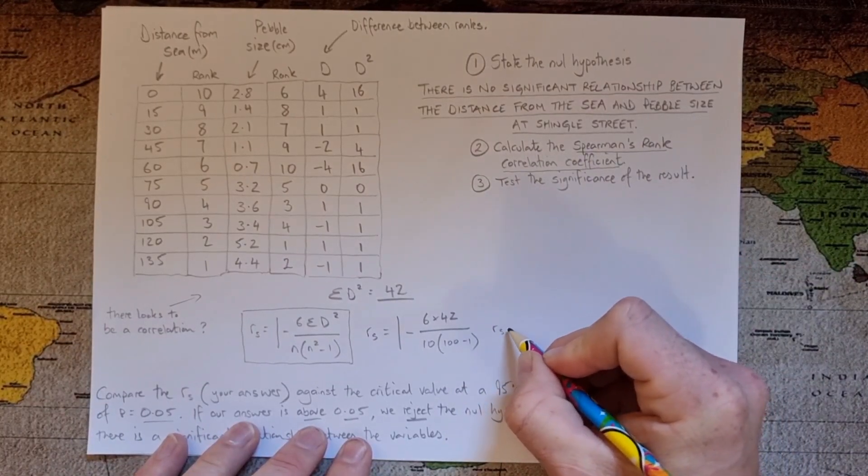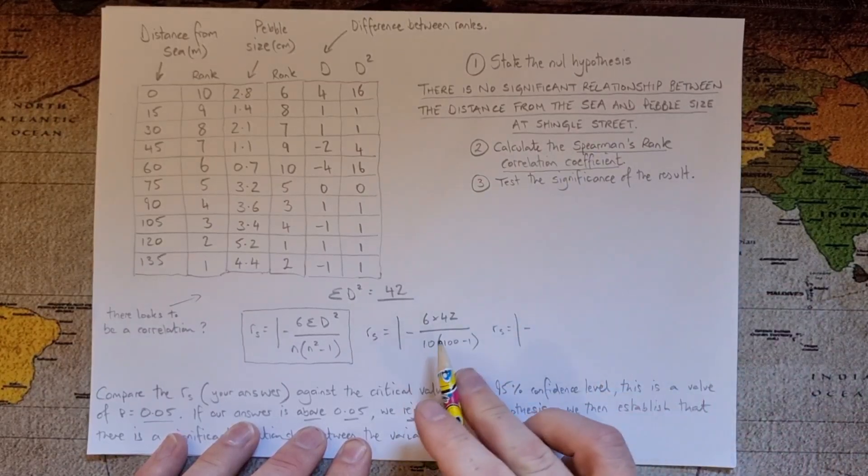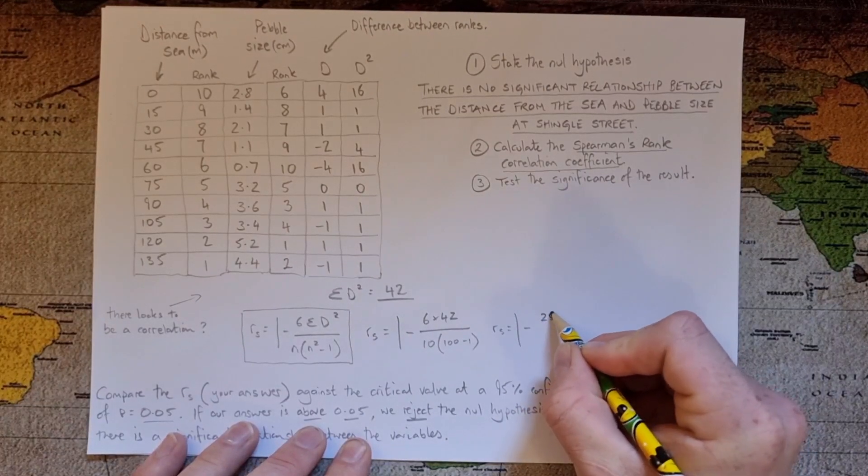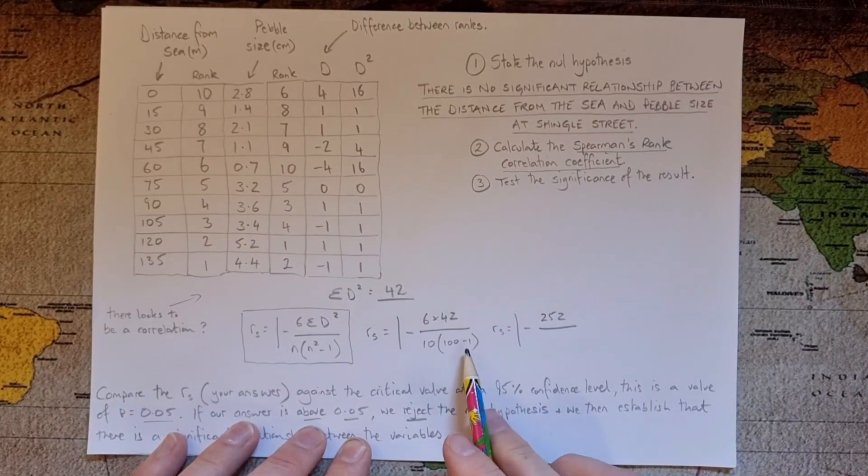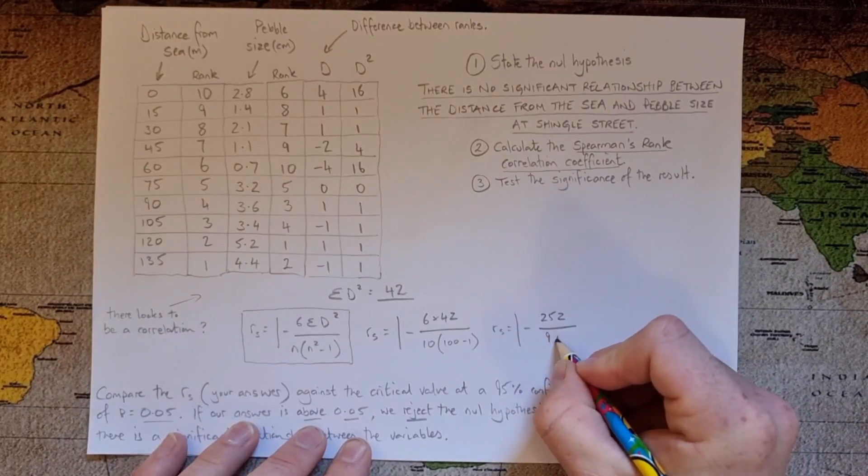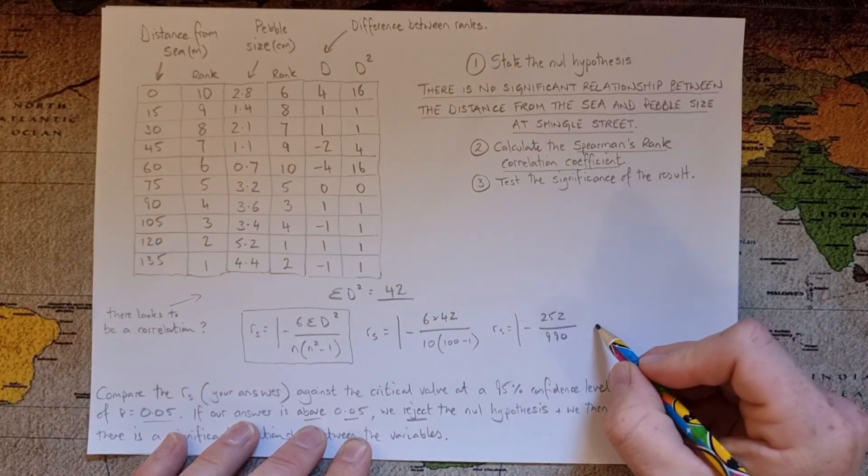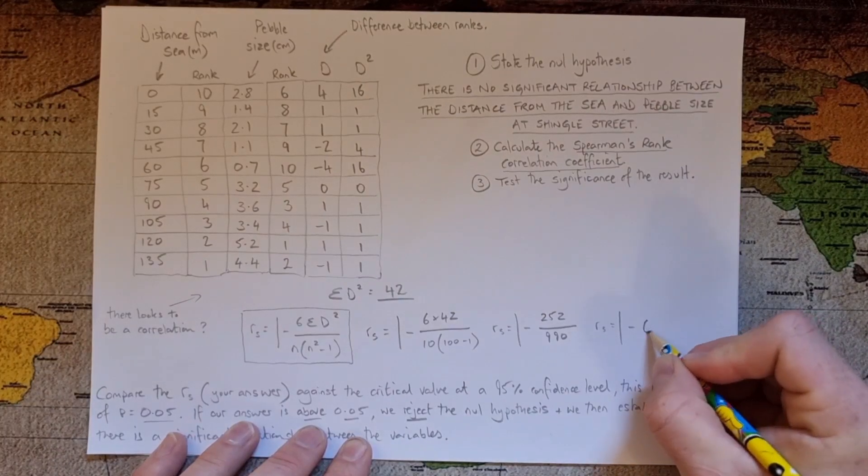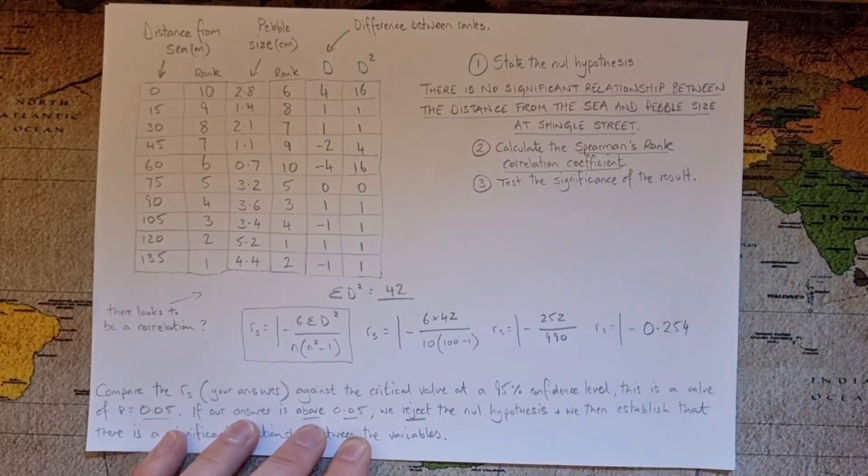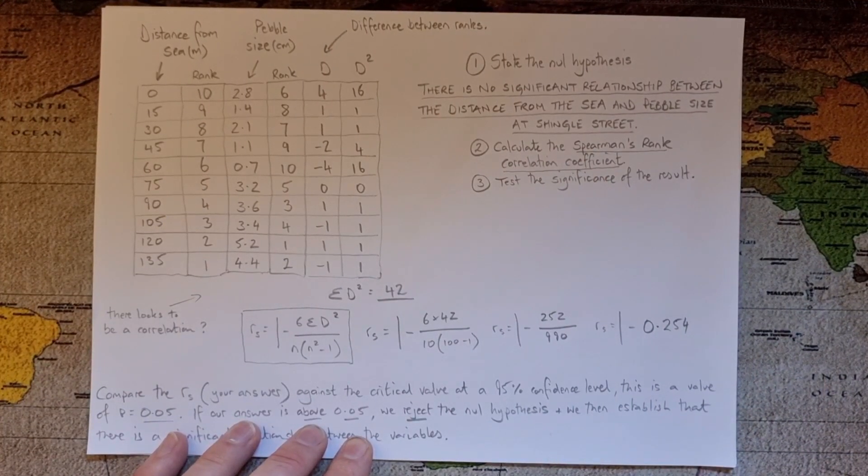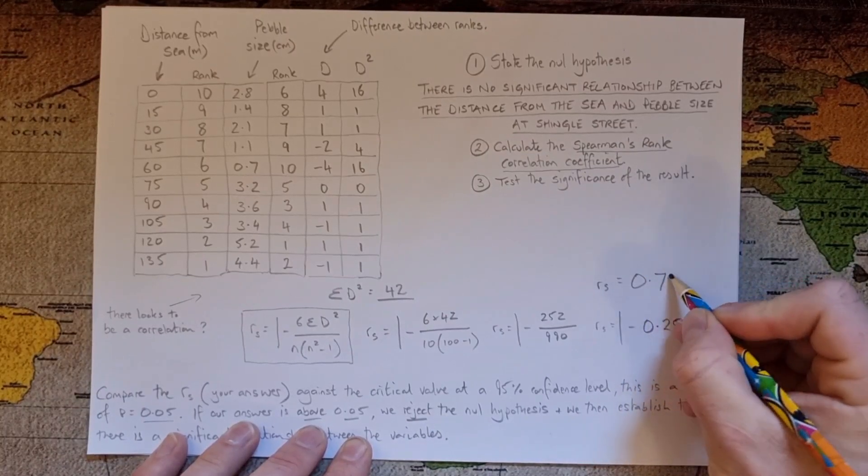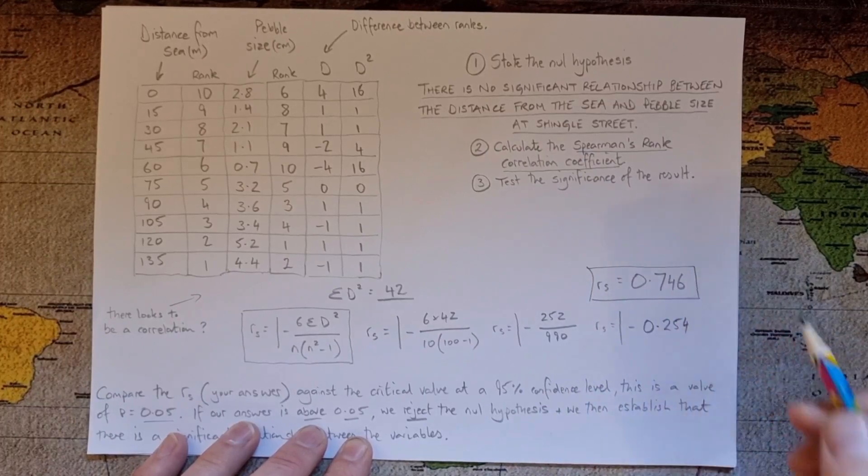Okay so we need to work that through. So again one more time, 1 minus, and then we're going to do 6 times 42 gives us, 6 times 42 is 252 over, so 100 minus 1, so 99 times 10 gives us 990. Okay so we work that through. I'm just going to, equal to 1 minus and then that's going to be 252 over 990 which is 0.254, which then we just need to do 1 minus that number. So that means we do, let's go up here, equals, that's going to be 0.746 roughly. Okay there we go, that is the answer.